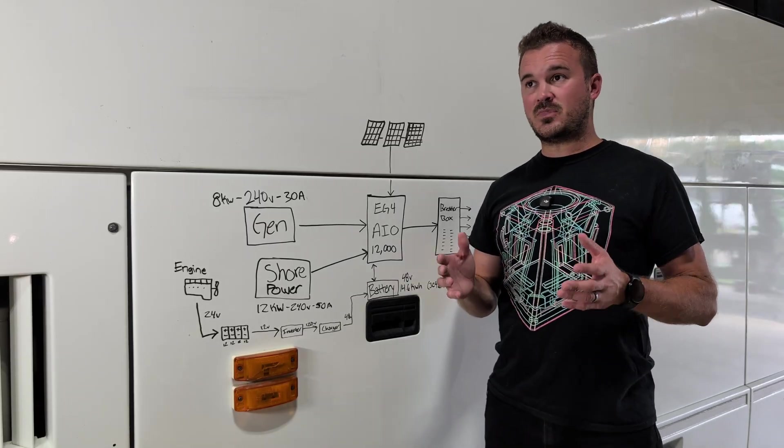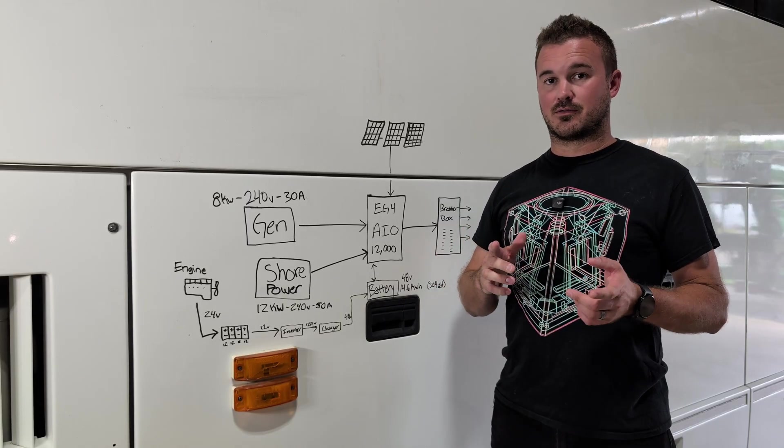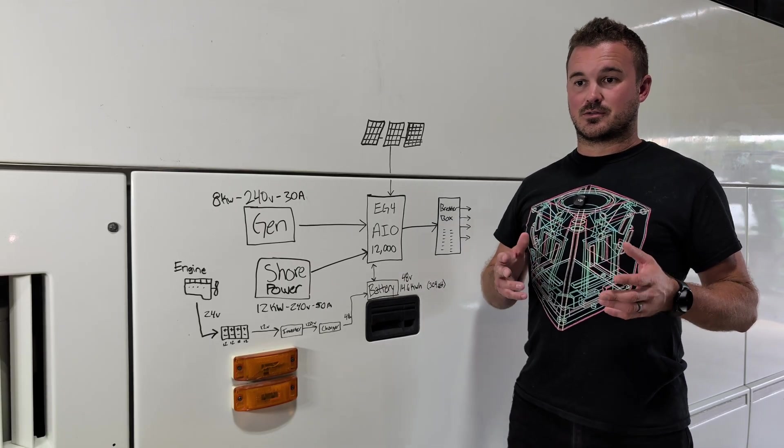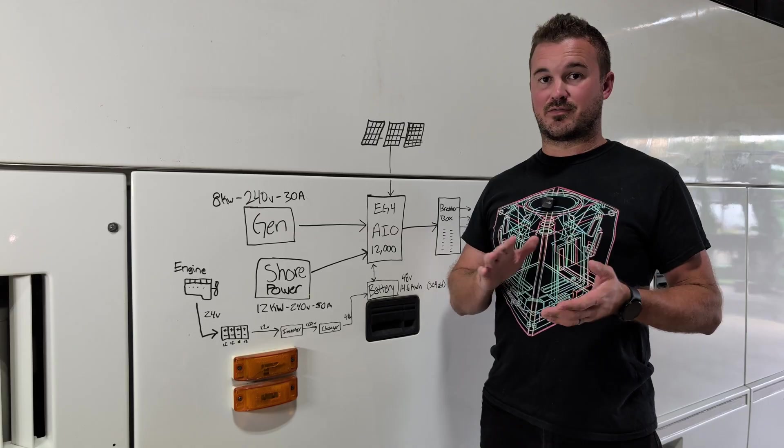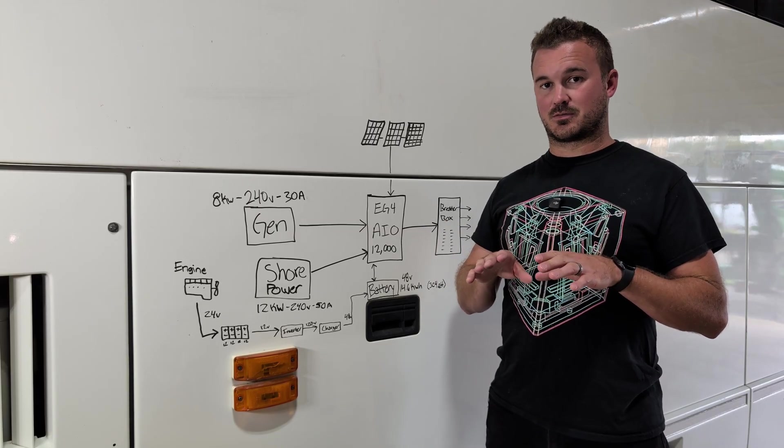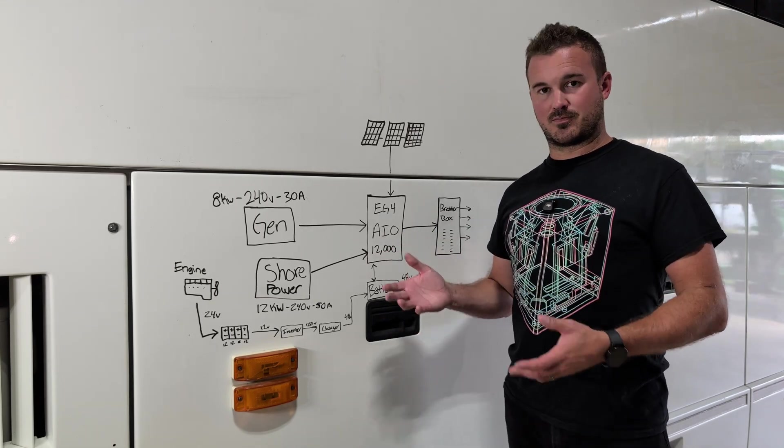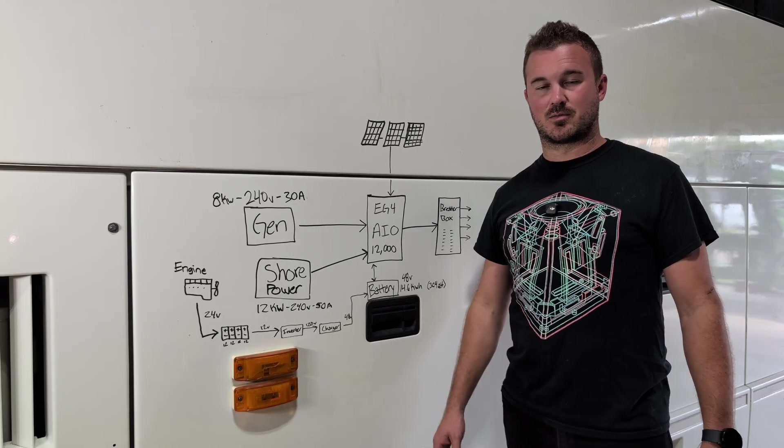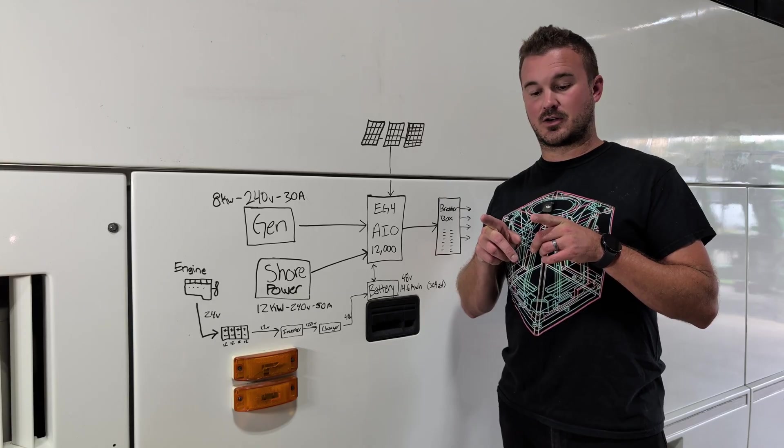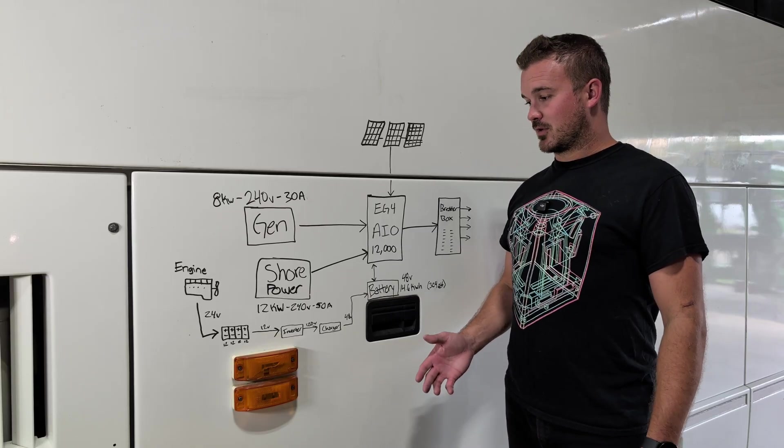So a normal 30-amp RV pedestal is only going to give you 30 amps of 120-volt. RV pedestals give you two legs of 50-amp 120-volt, but they're out of phase by 180 degrees, which basically makes it 240 volts for usable practical purposes. That's how 240-volt appliances work in your home. You have two different legs of 120-volt electricity, but it's perfectly out of phase. So that's how that works.